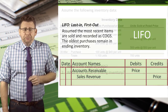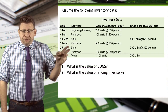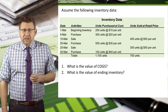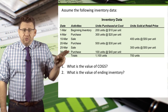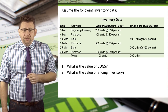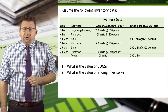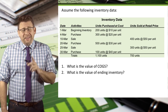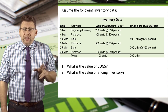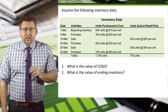Let's look at an example. Assume the following inventory data: March 1st, beginning inventory is 200 units at a cost of $10 each. March 4th, we purchased an additional 300 units at $20 each. On March 10th, we sold 400 units at $50 each — that's the retail price, not the cost. March 20th, we purchased an additional 500 units at $30 each.